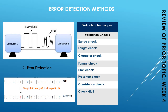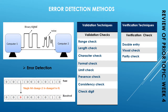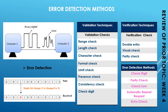Similarly, we have verification techniques. Verification is basically a way of preventing errors when data is copied from one medium to another — for example, from your hard disk or CD to a USB drive. Verification is needed when you are copying data. We have different sorts of checks for verification: double entry, visual check, and parity check.